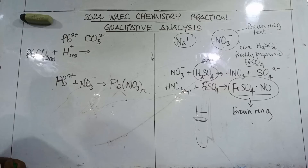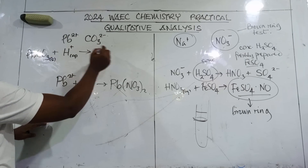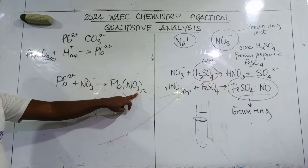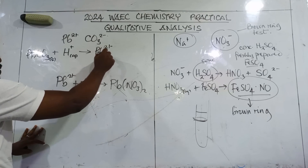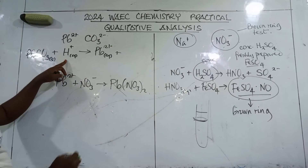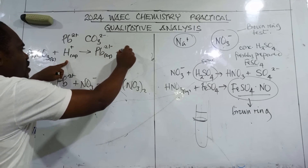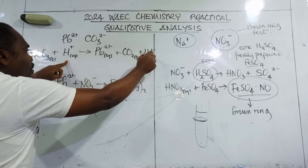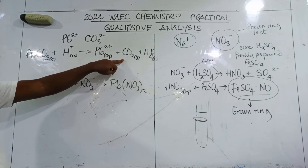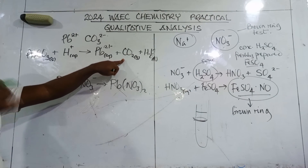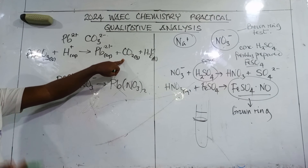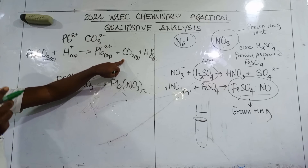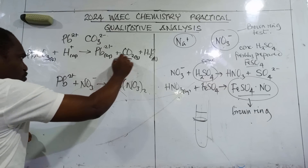The Pb2+ will combine with the trioxonitrate(V) ion from the acid to form soluble lead(II) trioxonitrate(V), which is what you started with. So from the reaction you get Pb2+ (aqueous), plus carbon(IV) oxide given off as a gas, plus water. The observation will be effervescence of a colorless and odorless gas that turns lime water milky.